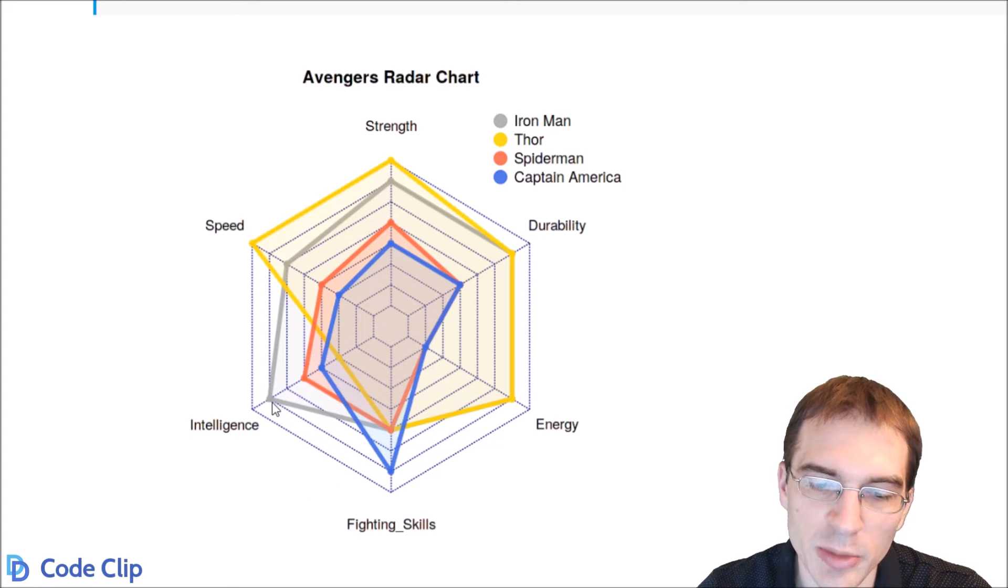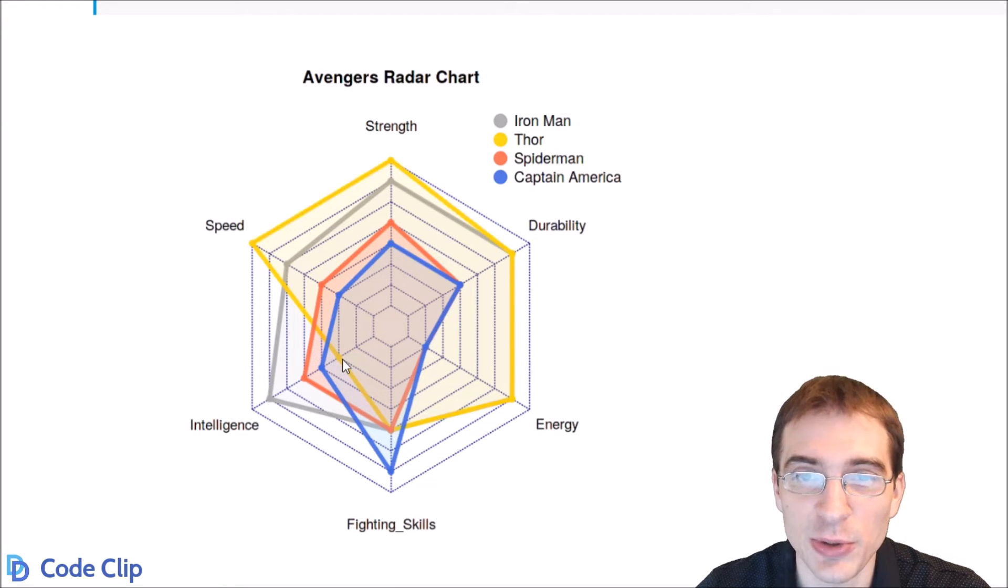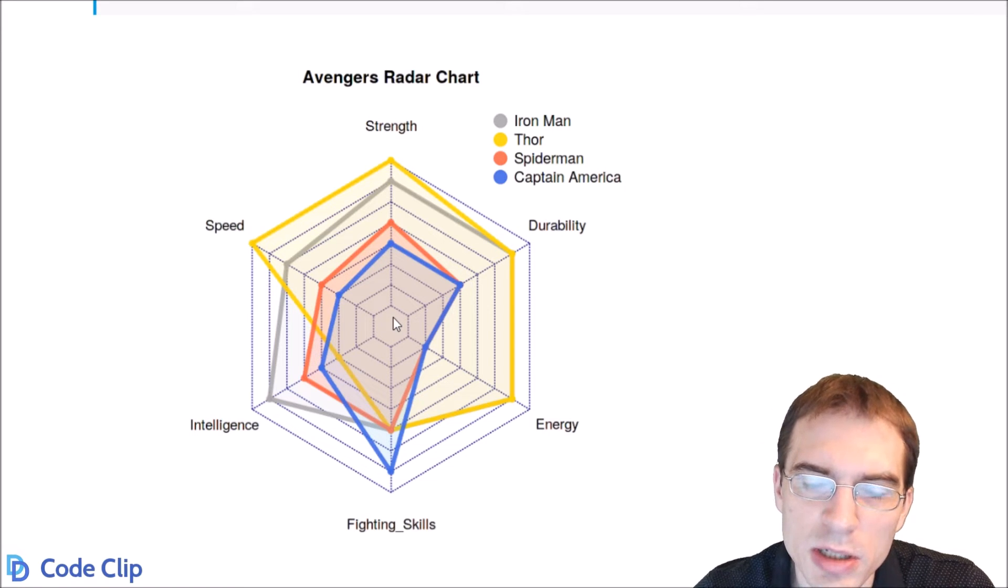And of course, Iron Man Tony Stark has a very high rating on his intelligence, while Thor is a bit lacking in that category, only having a score of two. Now radar charts are also sometimes called web charts or spider charts. So I thought it was a good idea to include Spider-Man on this one.